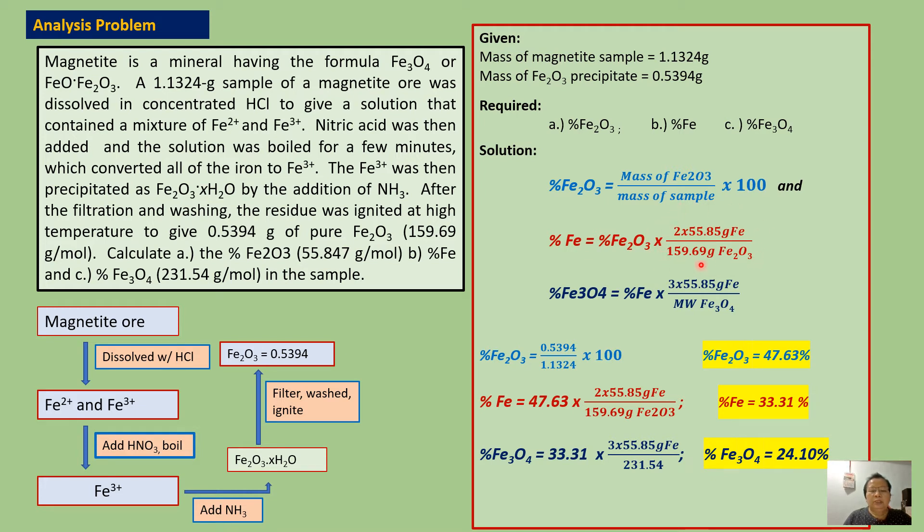This factor converts percent Fe2O3 to percent iron. Then we have to calculate also percent magnetite or percent Fe3O4 equal to this formula, percent iron times this factor. Now this factor converts percent iron to percent Fe3O4. Now let us solve.